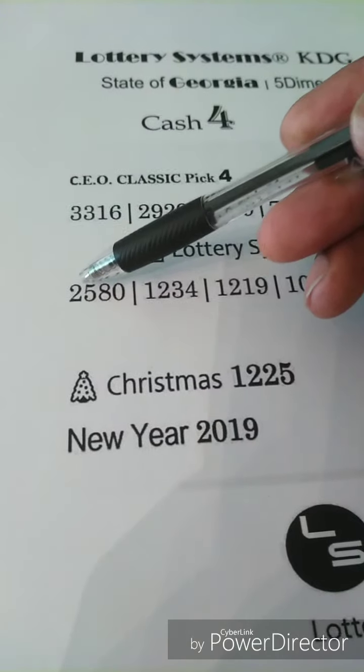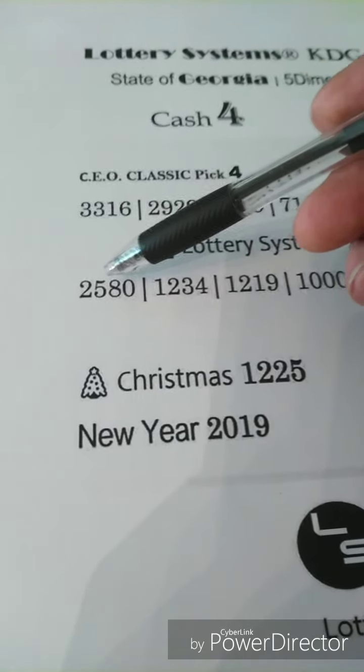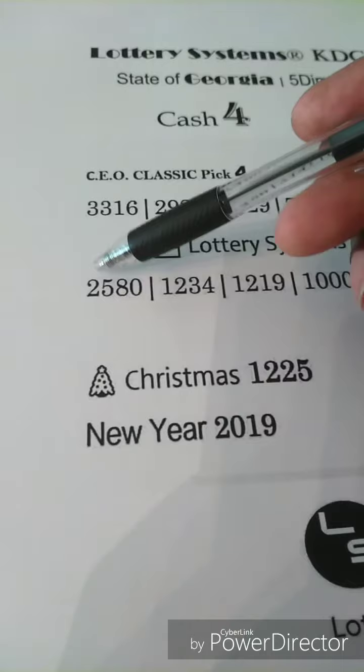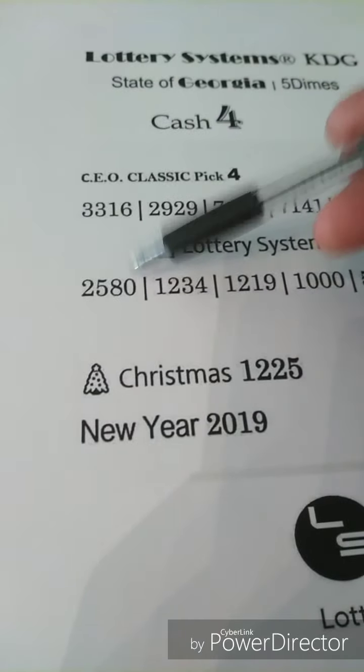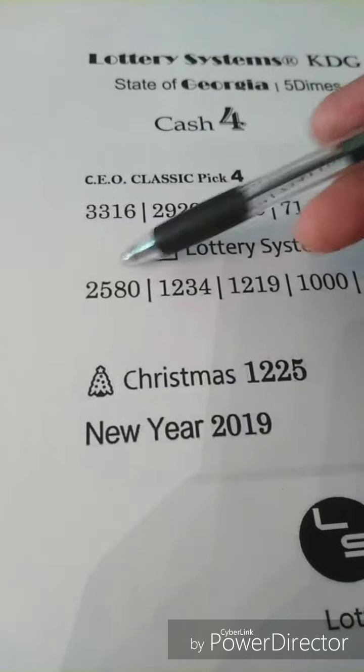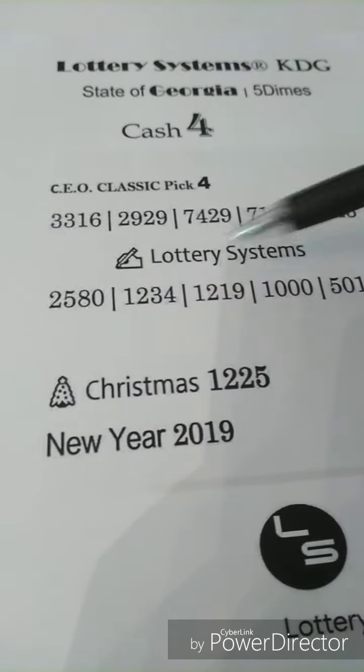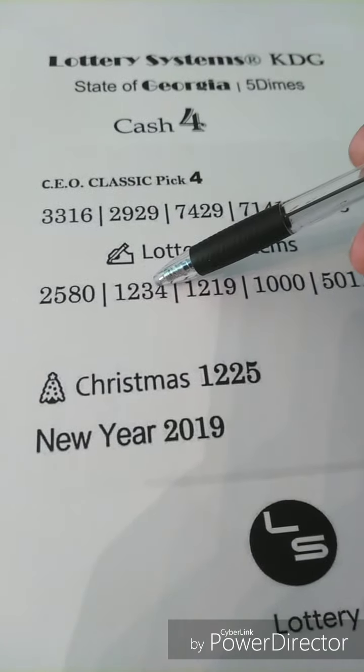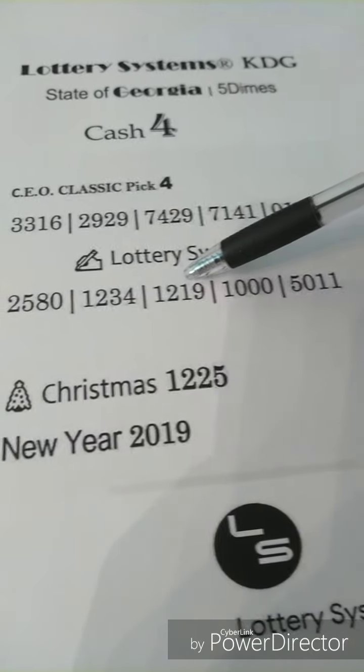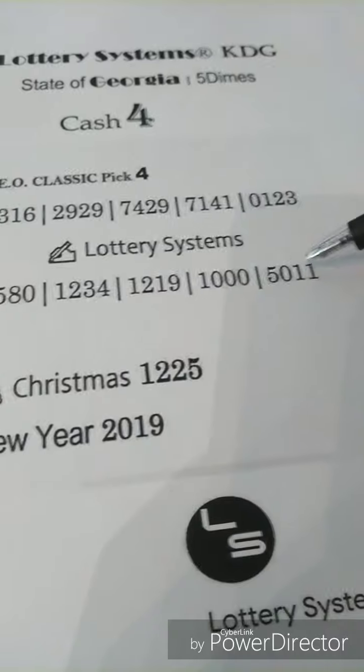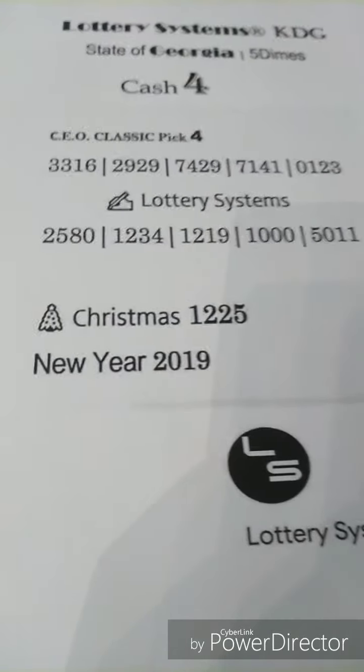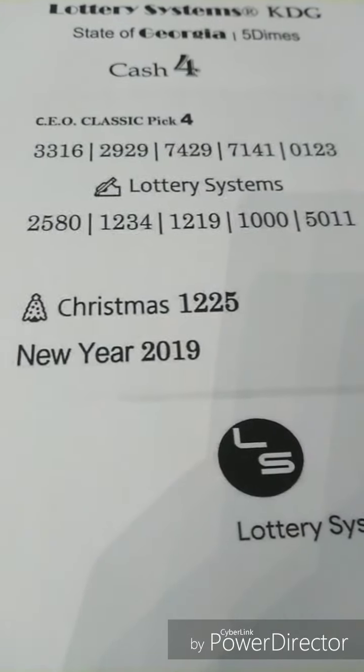This here, 2580, I was playing in the state of Georgia as 285 with the zero on the end. They're giving out free money, ATM and armored trucks on Interstate 285. Of course, the classic 1234, 1219, keep it 1000, and of course the 5011.